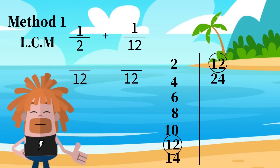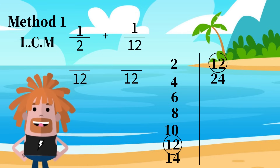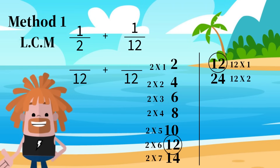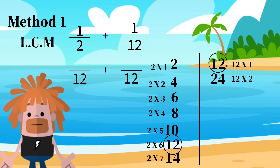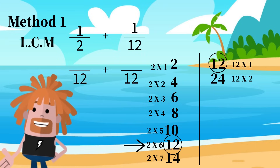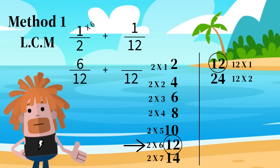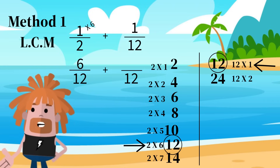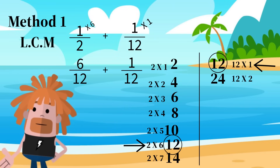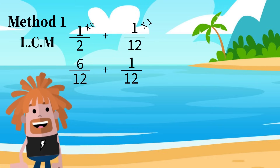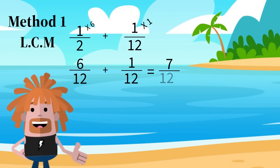Now that we have our denominator, we need to figure out what our numerator is going to be. Whatever you multiply by to get the new denominator for your first fraction, you use to multiply the numerator. You multiplied by 6 to get 12 for our first fraction, so multiply the numerator by 6: 6 times 1 is 6. For our second fraction, you multiply by 1, so 1 times 1 equals 1. Now that we have formed equivalent fractions, we can add our numerators: 6 plus 1 equals 7, and we write back our denominator. Our answer is 7 twelfths.